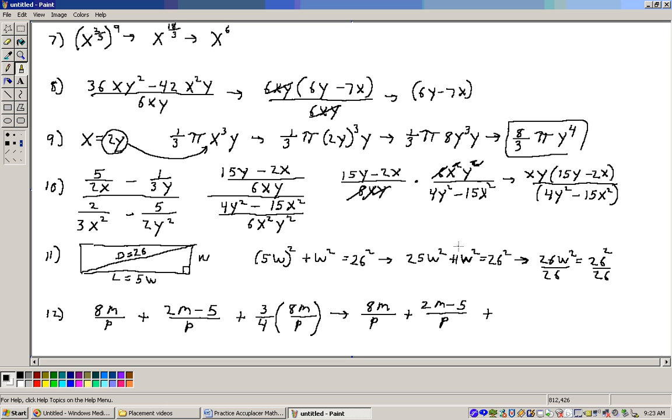5w plus 1w. 5w² plus 1w² is 26w² equals 26². Divide through by 26, and I get w², I'll write this here, w² equals 26² over 26 will just be 26. So if w² equals 26, take the square root of both sides, and w would be the square root of 26. And that's what the answer is to that problem.